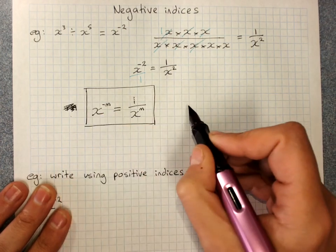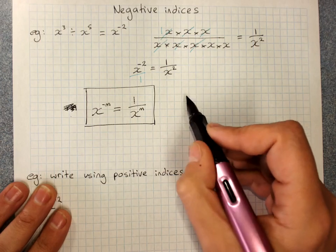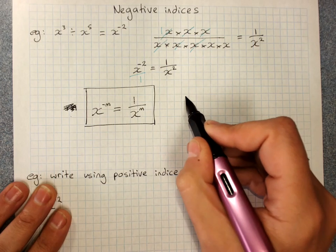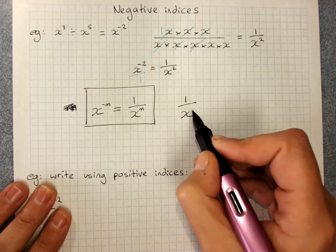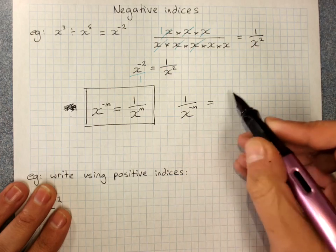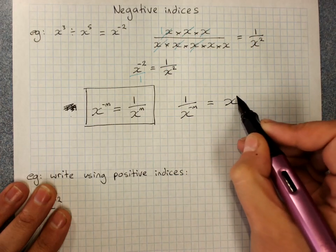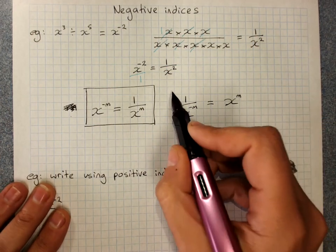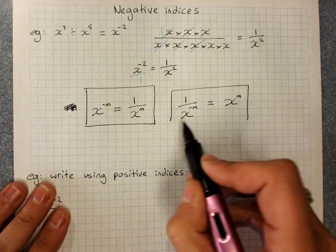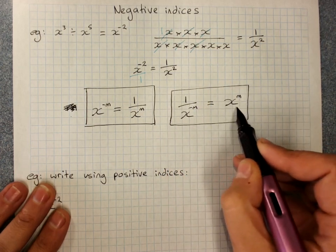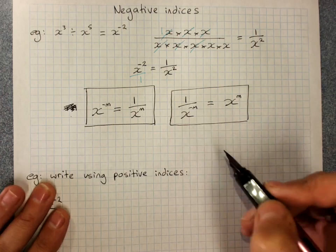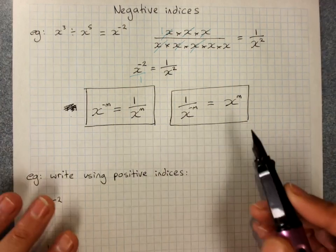And if I had 1 over x to the negative m, that would be the same as x to the positive m, because this would be over 1. It's the flip. It's the reciprocal. This is how this rule works.